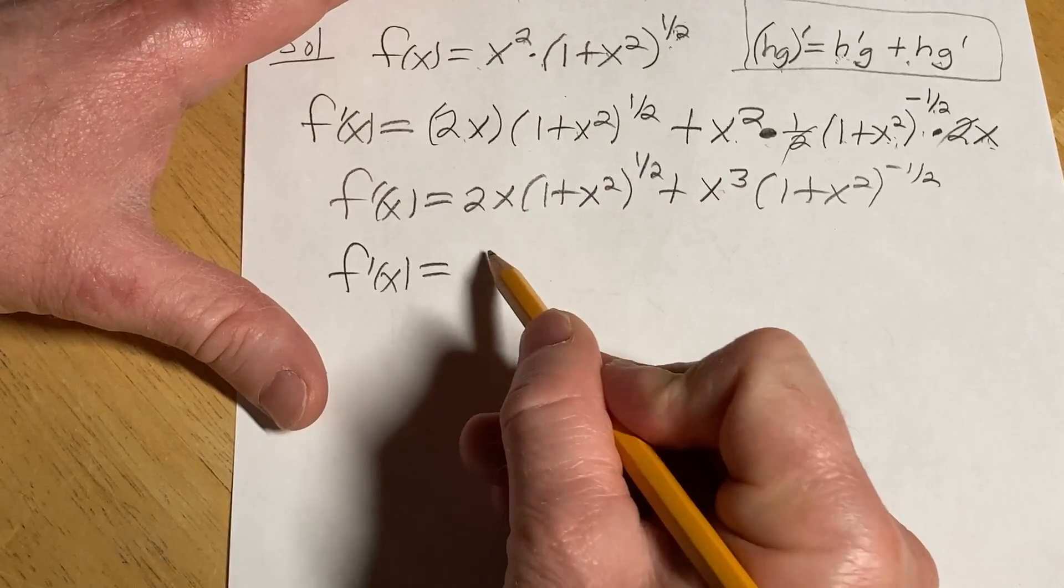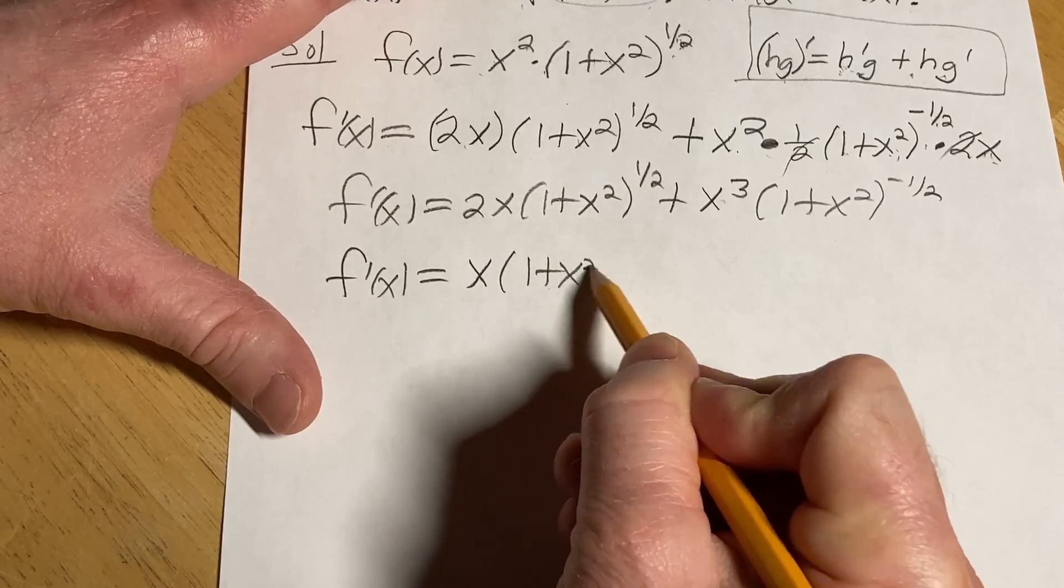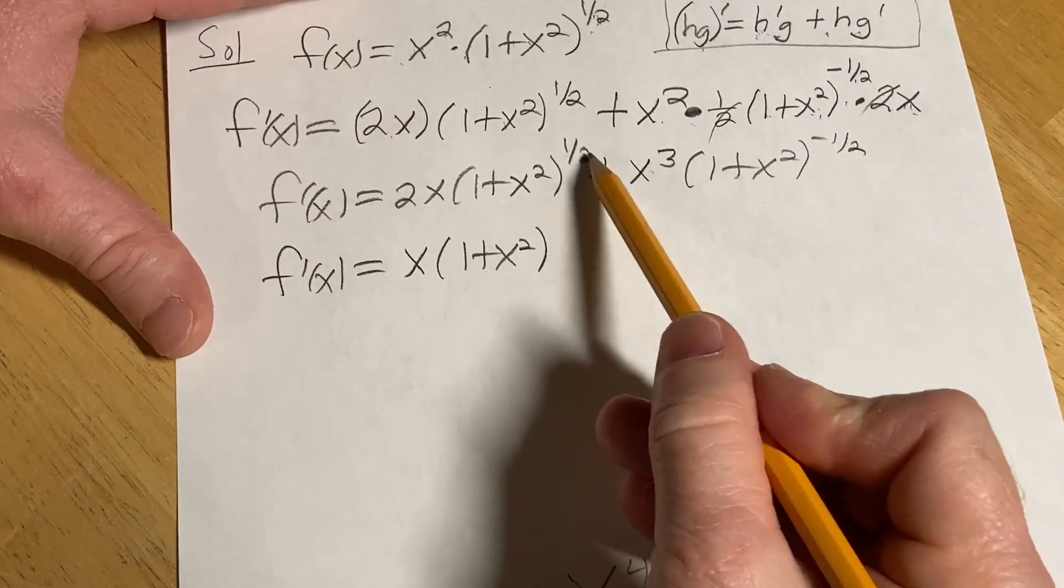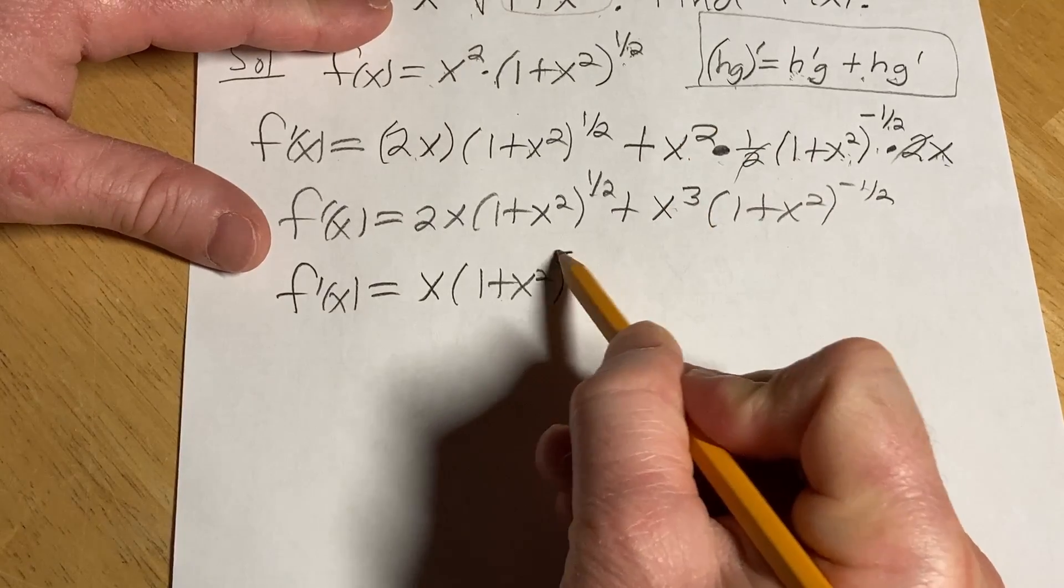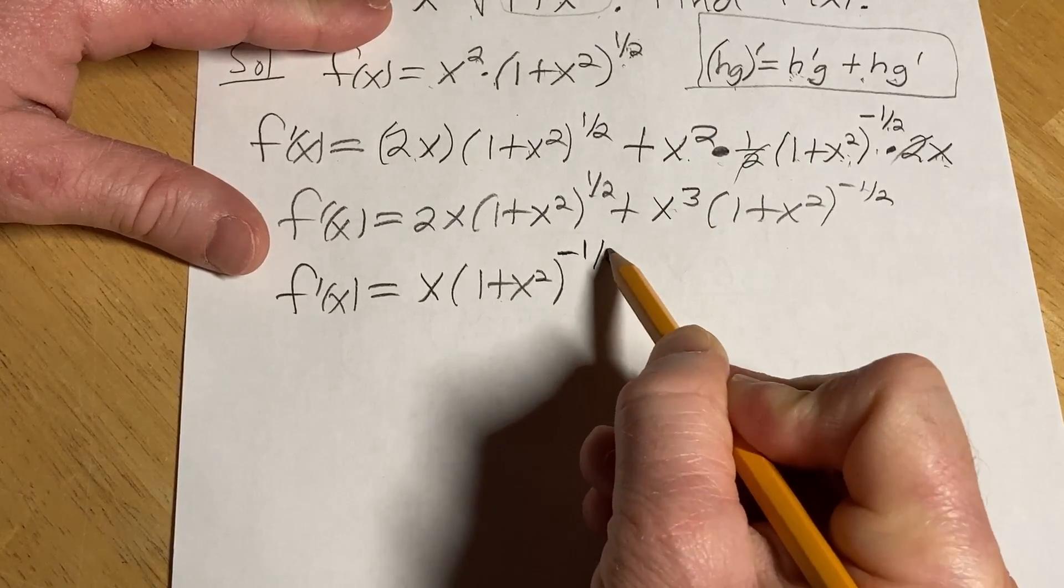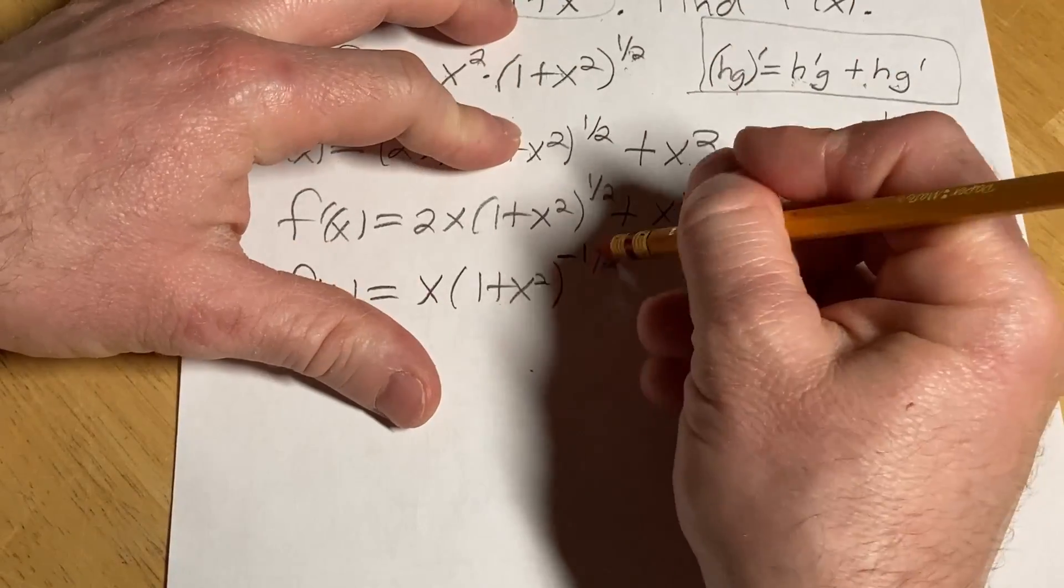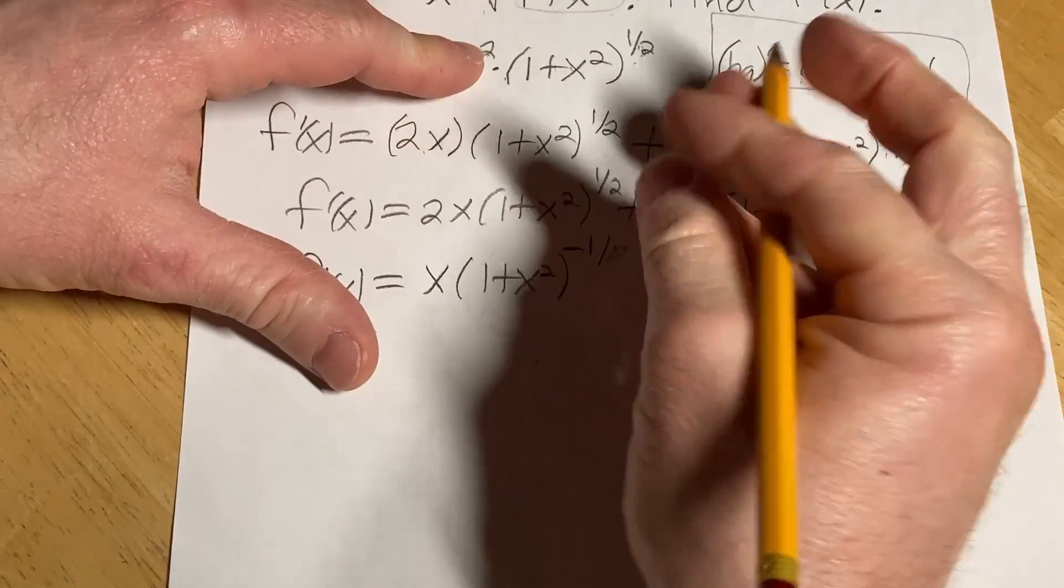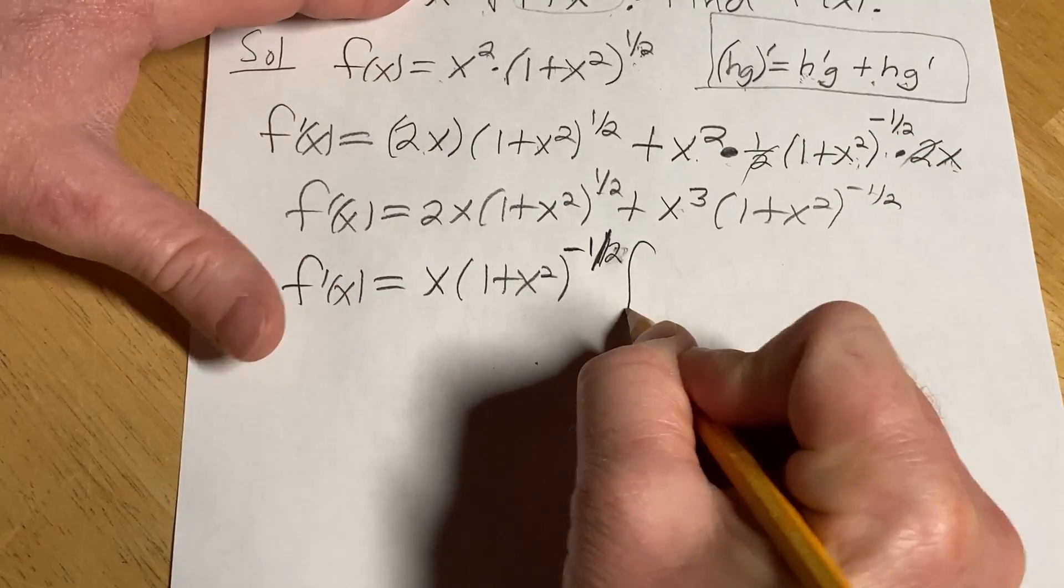So we're going to pull out x. And we're going to pull out 1 plus x squared. Well, let's see. Which one is smaller? 1 half or negative 1 half? Well, negative 1 half is. So we pull that out. Just like that. My 2 is a little weird. Let me clean that up. Let me clean up my 2. Make it look good. There we go. Times. Use a bracket.